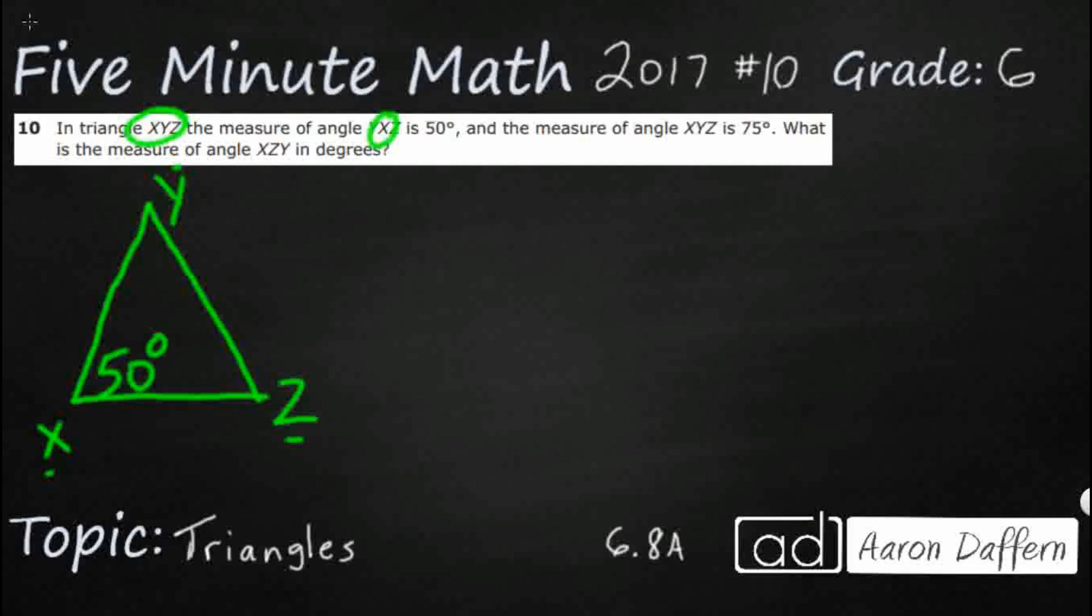And then we've got the measure of angle XYZ. So it looks the same, but it's actually different because it's X, Y, Z. So we get X, Y, Z. So this is 75. And obviously, we're not drawing it to scale because we're not using a protractor.